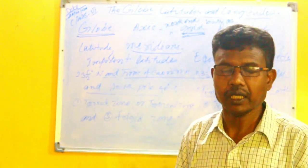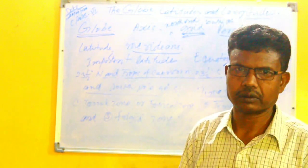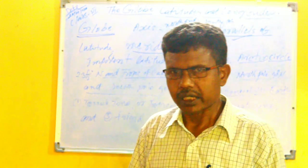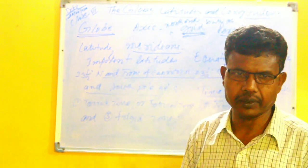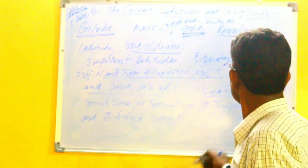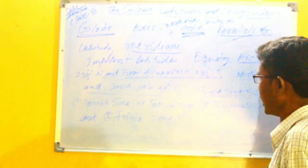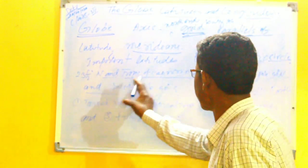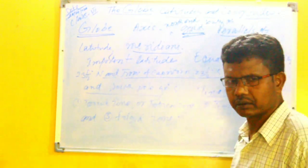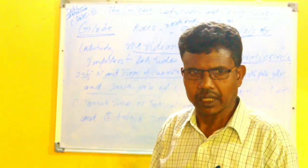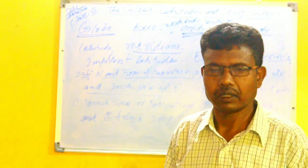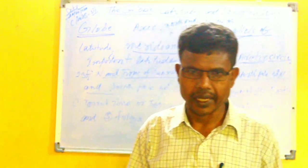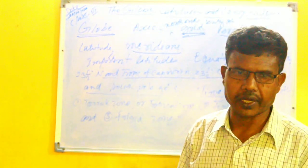Beyond these two latitudes, the sun never appears directly overhead. Now let us see the Arctic Circle and the Antarctic Circle. These are the two points where the sun does not set for a day and does not rise for a day.